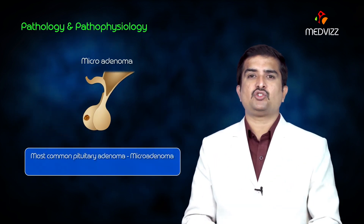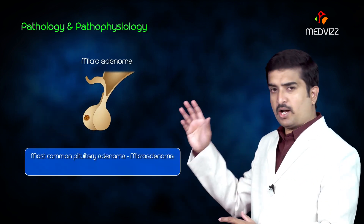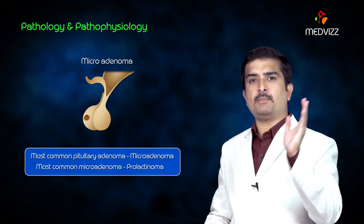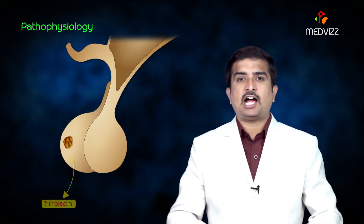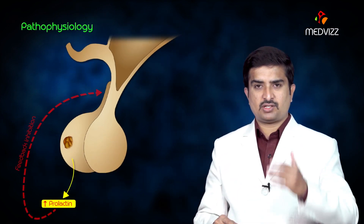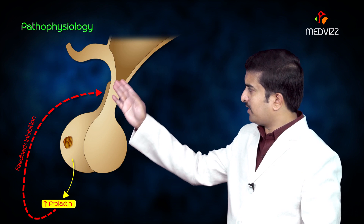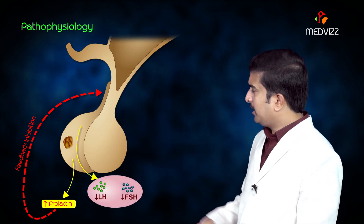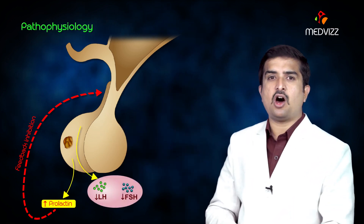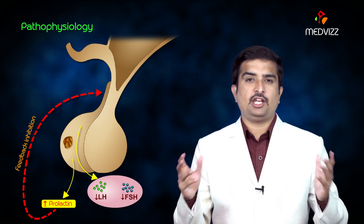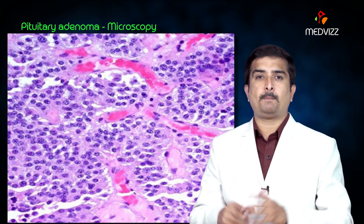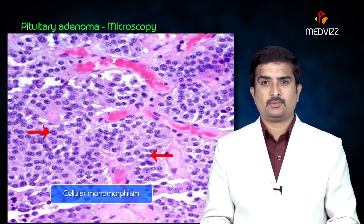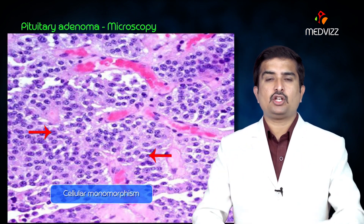The most common pituitary adenoma is micro adenoma, and the most common micro adenoma is prolactinoma. The pathophysiology involves hyperprolactinemia resulting in decreased levels of follicle stimulating hormone and decreased levels of luteinizing hormone via feedback inhibition. Under microscopic picture, there is cellular monomorphism seen in the adenoma, in contrast to that of normal pituitary.